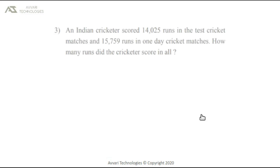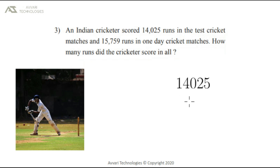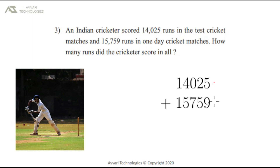Now let us solve a verbal problem, which says: an Indian cricketer scored 14,025 runs in test cricket and 15,759 runs in one-day matches. How many runs did the cricketer score in all? We need to find the total number of runs scored. In test matches he scored 14,025 runs, in one-day matches he scored 15,759 runs. We will add these two numbers and get 29,784.